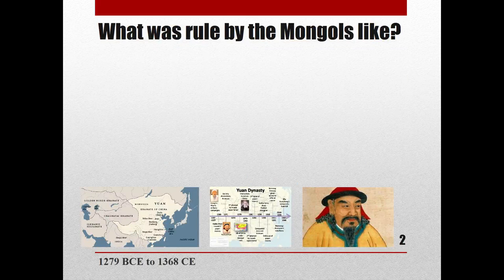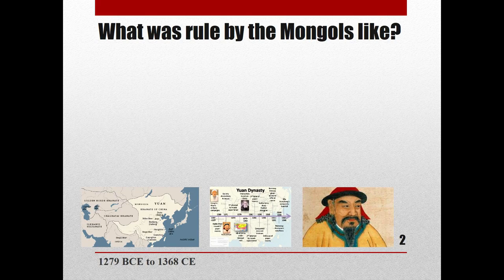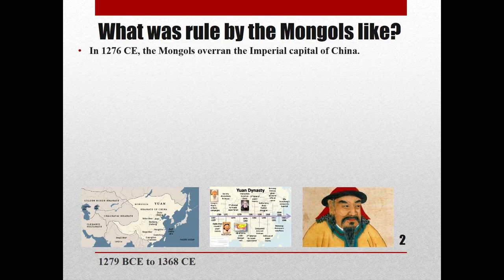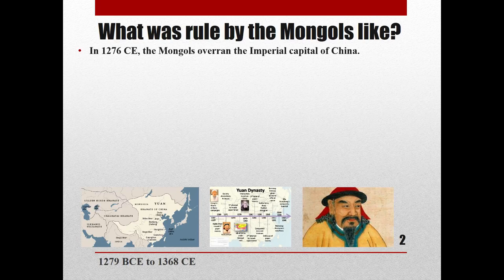We're skipping the vocabulary today and going straight into it. Our first question is: what was rule by the Mongols like? To make a long story short, China was conquered by an outside power — what we now know today as Mongolia, which is actually a very poor country today. In the year 1276 in the Common Era, the Mongols overran the imperial capital of China.